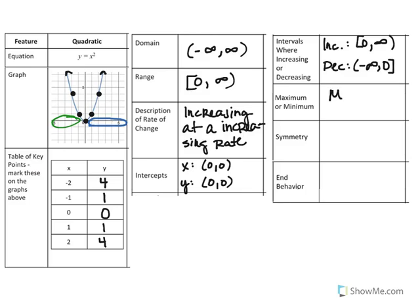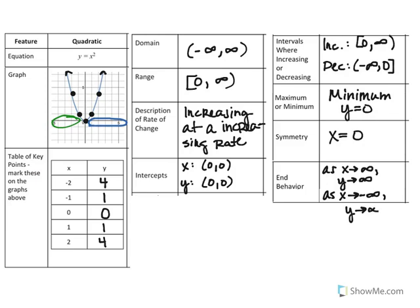This graph has a minimum value of 0 or y equals 0 and the symmetry – we have an axis of symmetry at x equals 0. And our end behavior – what we can say is that as x approaches infinity, our y values are going to approach infinity. And as x approaches negative infinity, our y values are also going to approach infinity just as they did when x approached infinity.